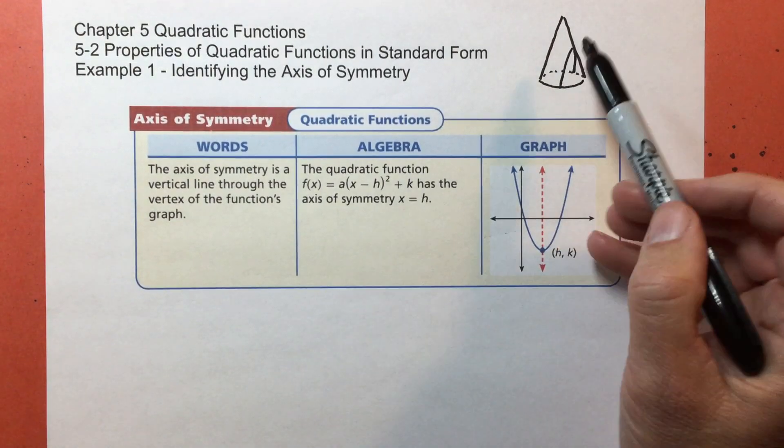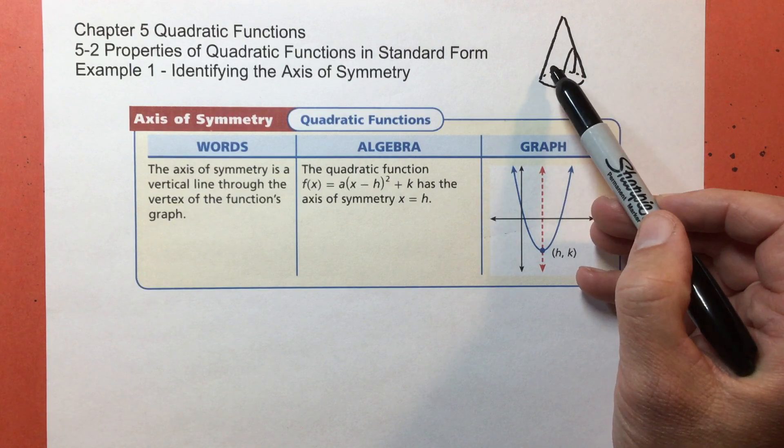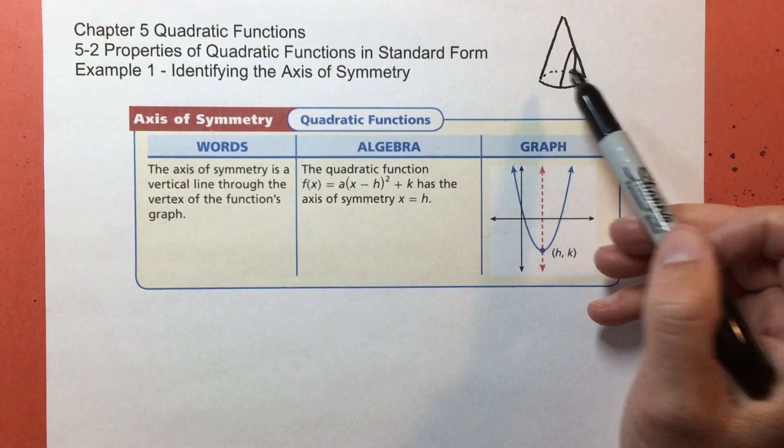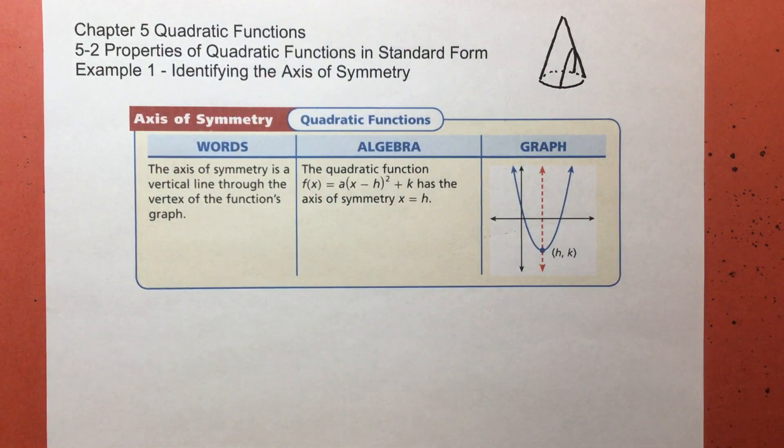If I cut it from not through the base, but from one side to the other side, I get an ellipse. If I cut it parallel to the base, then I get a circle. These are the conic sections that we'll learn about in analytical geometry. For now, we're just going to study the parabola.